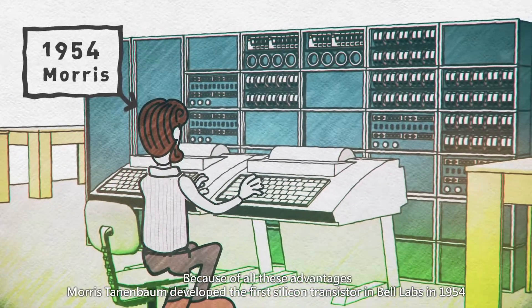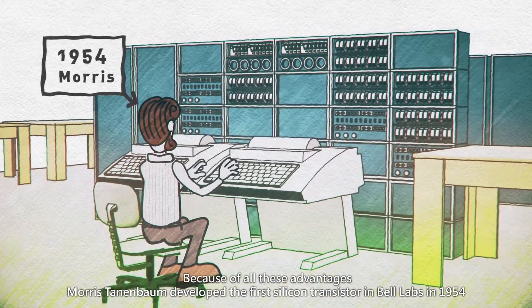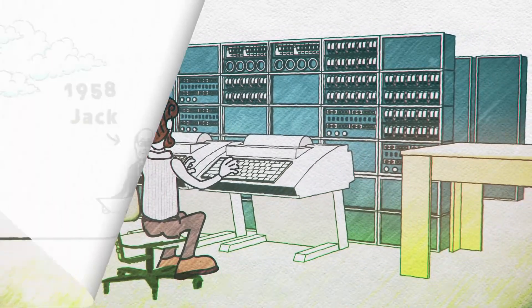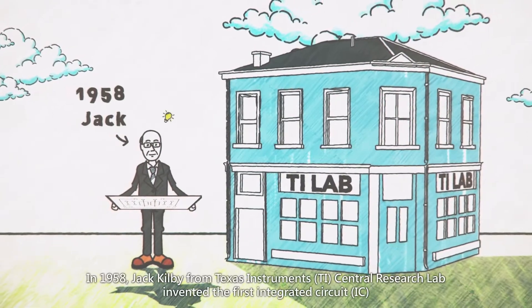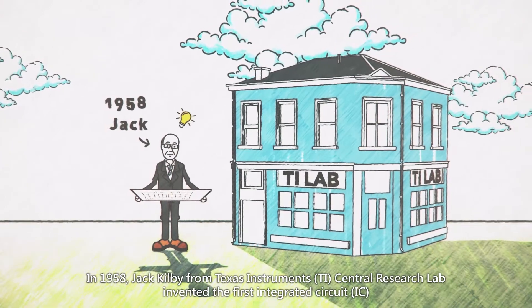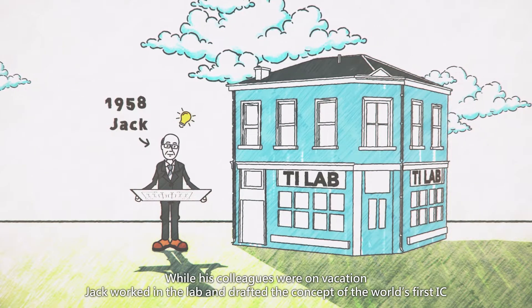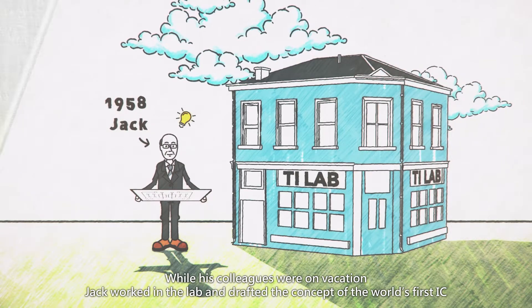Because of all these advantages, Morris Tannenbaum developed the first silicon transistor in Bell Labs in 1954. In 1958, Jack Kilby from Texas Instruments Central Research Lab invented the first integrated circuit. While his colleagues were on vacation, Jack worked in the lab and drafted the concept of the world's first IC.